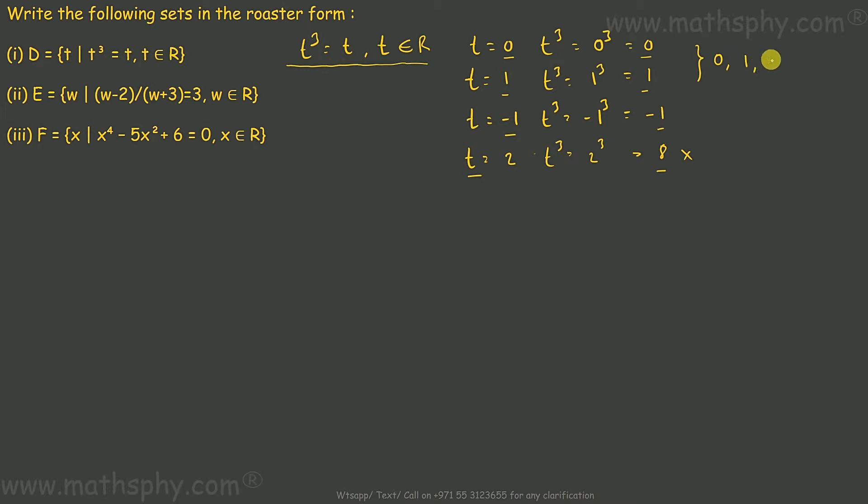This one here says we have a set called E where elements are W. Let's solve this, which gives me... So the element for this set would be negative 11 over 2.